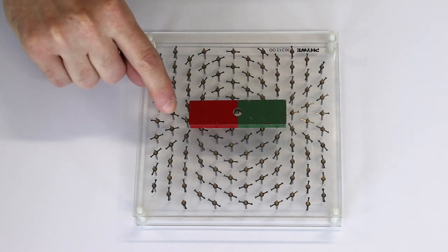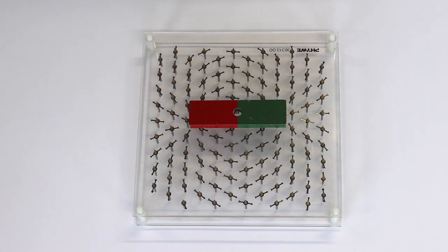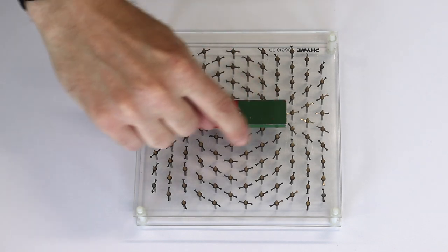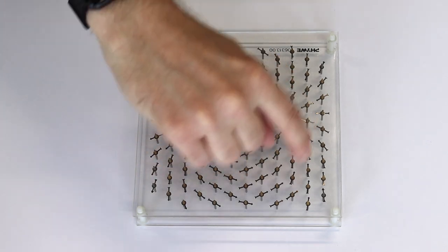These compass needles align tangent to the field lines, so the field lines are along these lines.